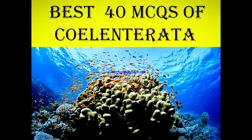What are Coelenterates? These are mostly aquatic or marine habitat animals. These species exhibit a tissue level of organization, because Coelenterates are lower organisms and they don't exhibit the organ level of organization. That's why they exhibit only tissue level of organization. Mostly Coelenterates are diploblastic animals, in which the body is made up of two layers of cells.